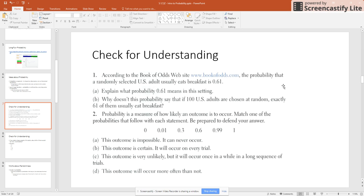And then part D, the outcome will occur more often than not. Well, I want the outcome to occur more often than not, which means I need it to occur more than half the time. So I've got two options there for more than half the time. It's the 0.6 and the 0.99.